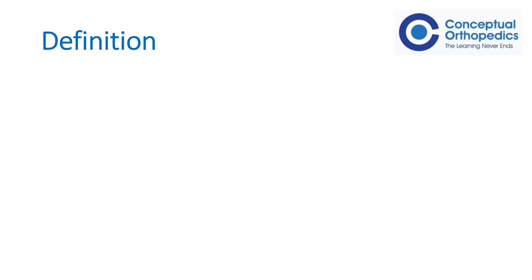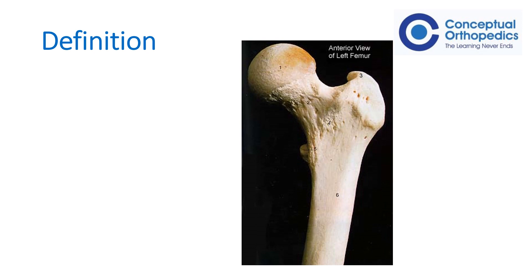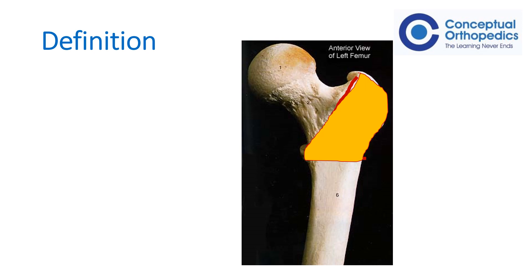How do we define the trochanteric region? If this is a model of a proximal femur, the intertrochanteric ridge is where the capsule is attached, and there is a horizontal line from the inferior border of the lesser tuberosity. The entire region in between is considered the trochanteric region, and any fracture in this region is considered a trochanteric fracture.